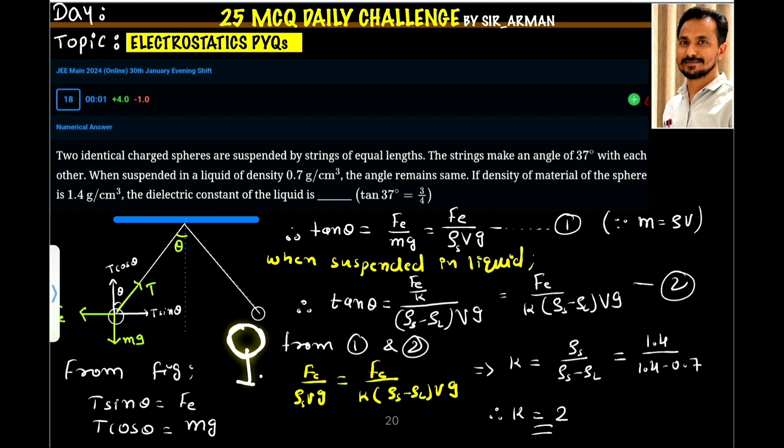The buoyant force is given by: in liquid, mg is acting downward where buoyant force is acting upward. So it is rho s minus rho l times v into g. This is from fluid mechanics. The buoyant force is rho s minus rho l, the difference in the density of the sphere minus the liquid, into volume into g. Now it is Fe by K into rho s minus rho l v into g.